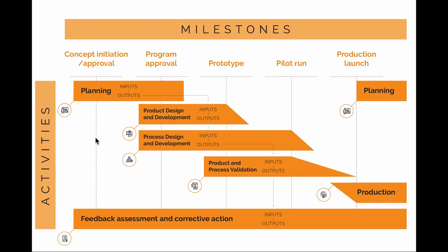This is how people typically represent the APQP process. In terms of milestones, you have concept initiation and approval, program approval, prototype, pilot run, and production launch — really from zero all the way to mass production launch. The activities include planning, product design and development, process design and development, product and process validation, all the way to production — and all along, a feedback loop with corrective actions for problem solving.